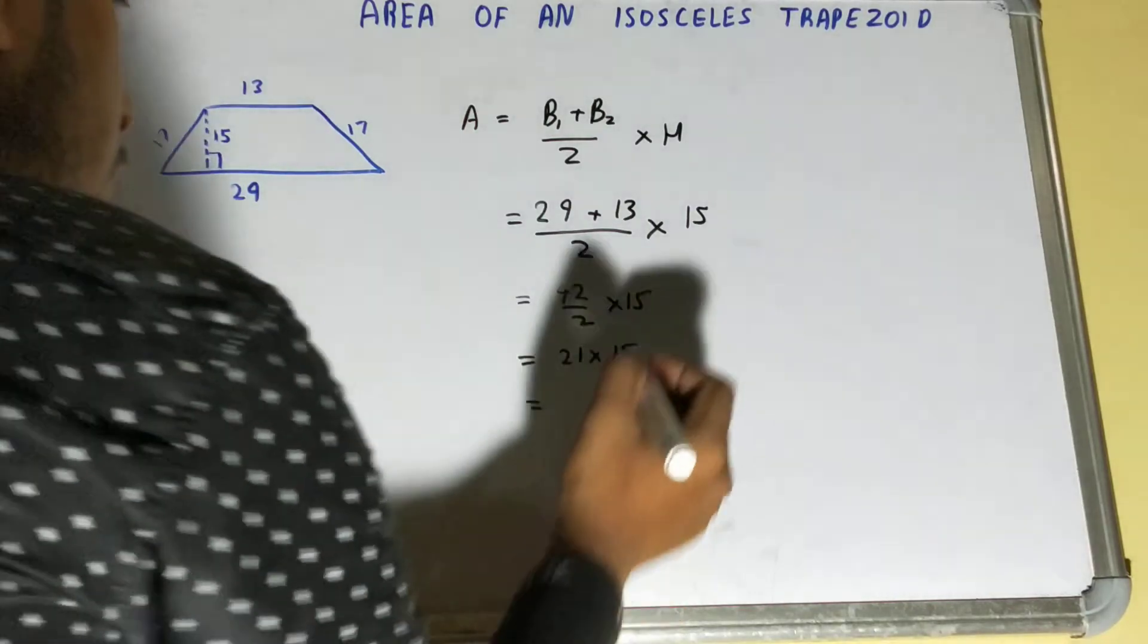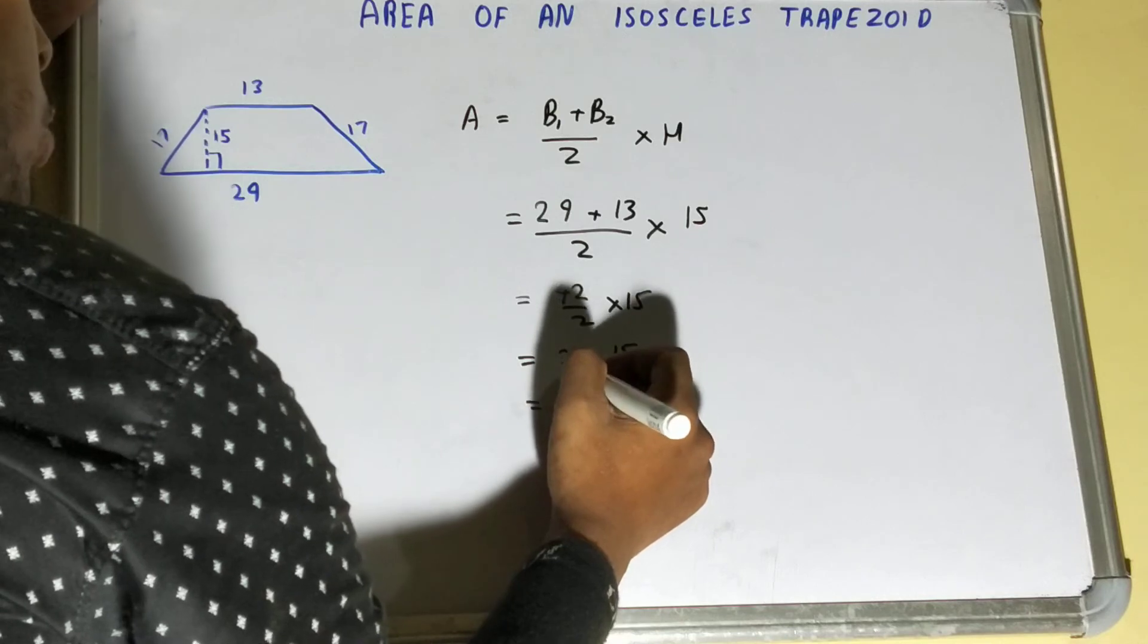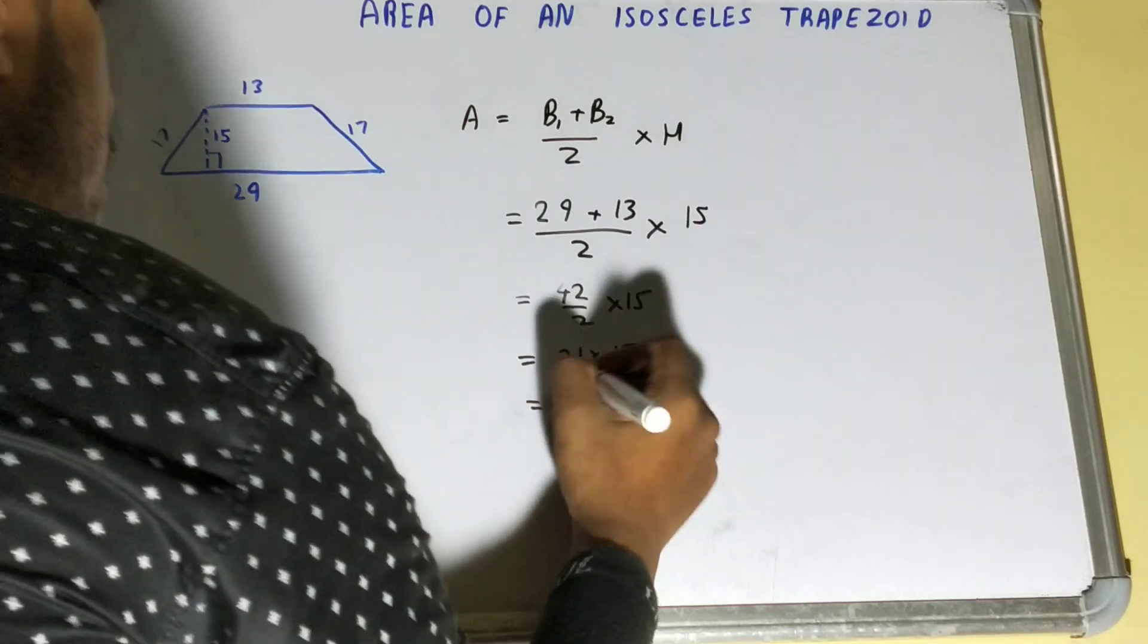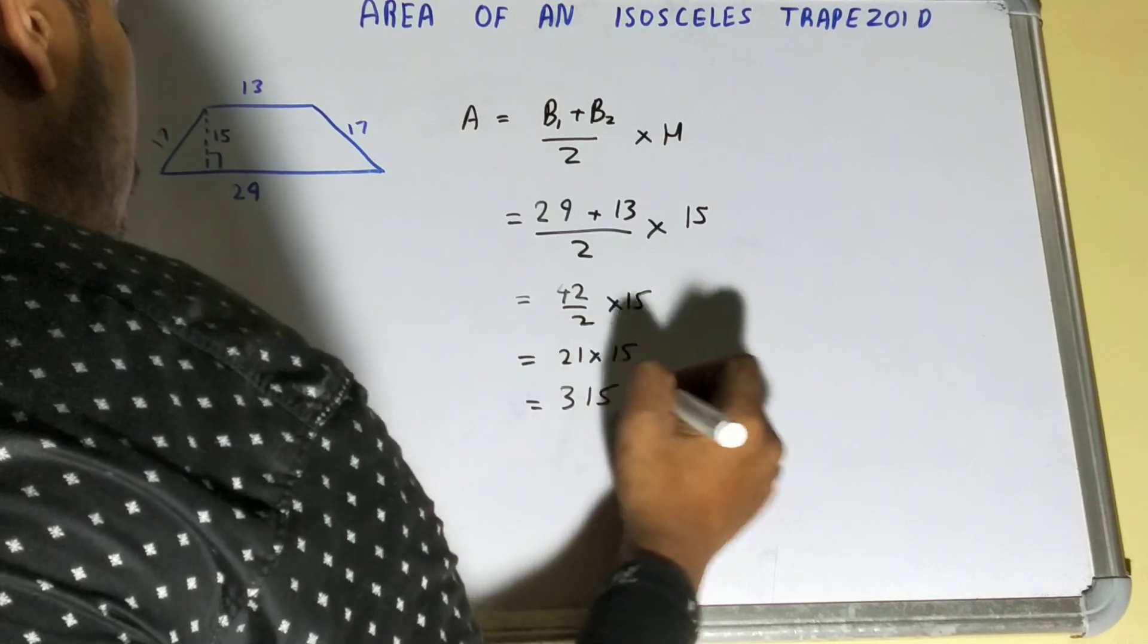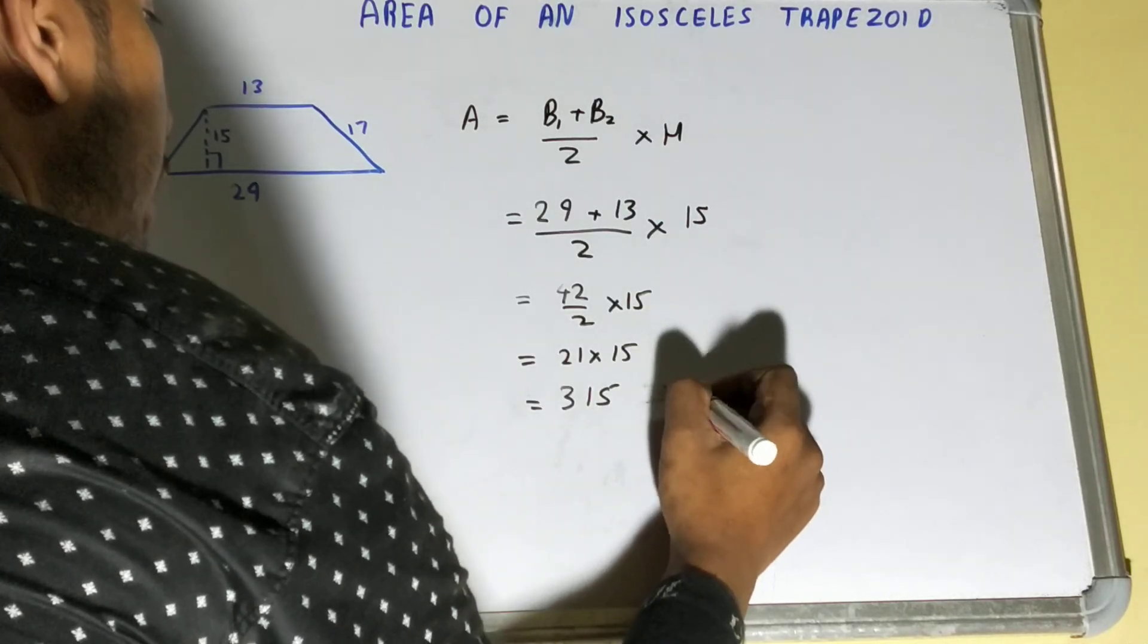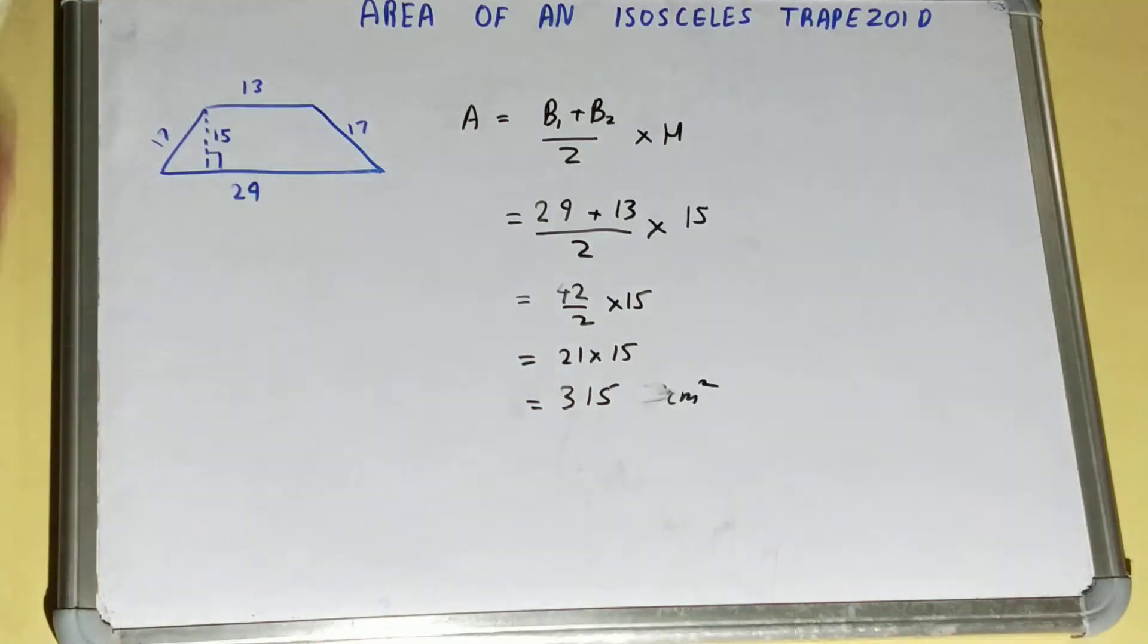So it will be 15 times 10 is 150, 20 is 300, and 315. So 315, and if it's centimeter then we'll write centimeter square. So this was all how you can find out the area of an isosceles trapezoid.